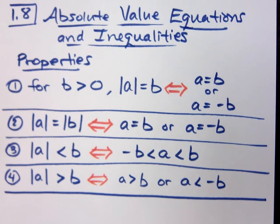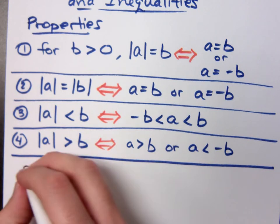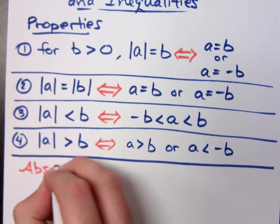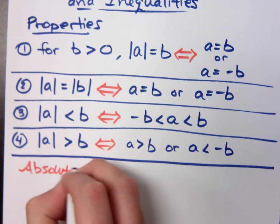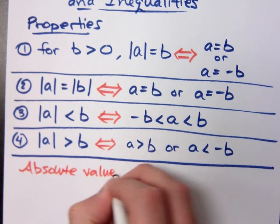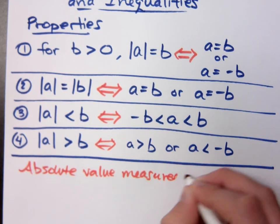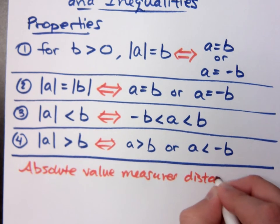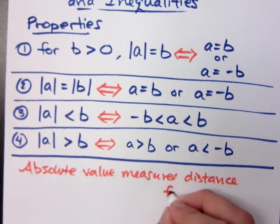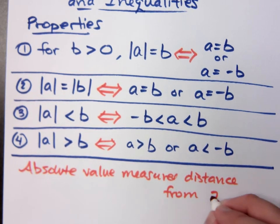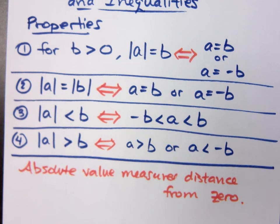Remember, one of the main things about absolute value is this. I think this will help you. Absolute value measures distance from zero. Absolute value is a measurement of distance from zero.